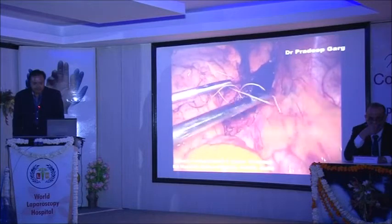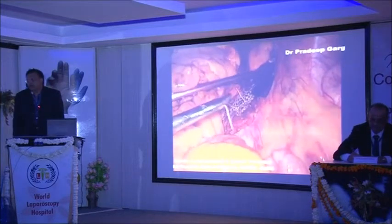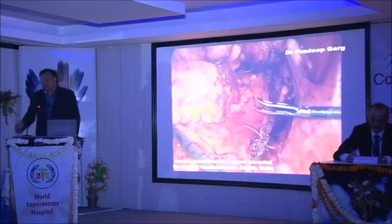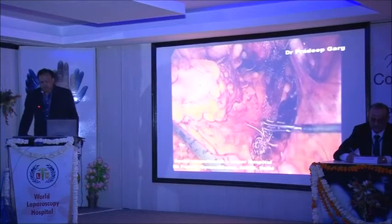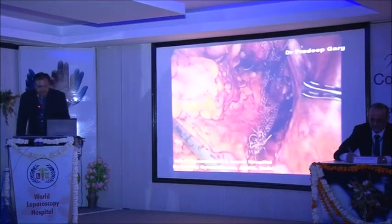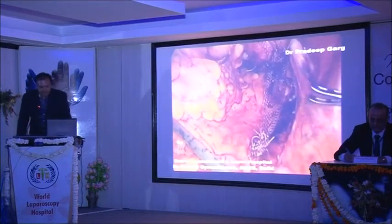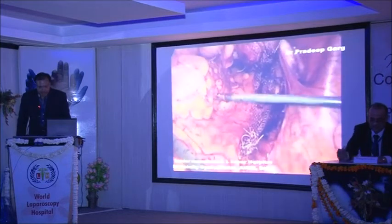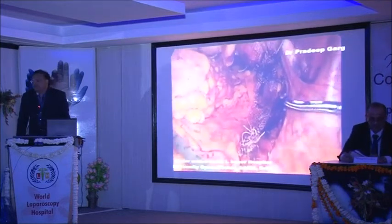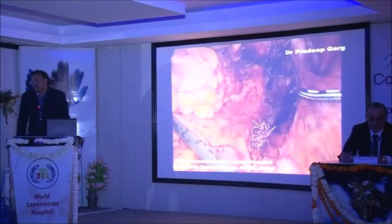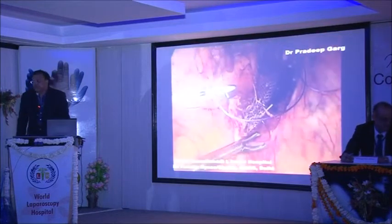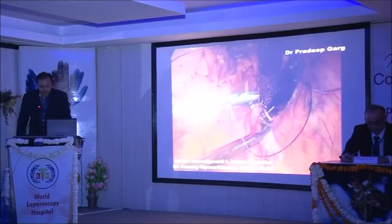Take three to four sutures, and if you are not comfortable with this suture, you can use a tacker. This is the final picture of the mesh — you can appreciate it. Then you cover this mesh with the peritoneum, cutting from the sacral promontory to the right utero-sacral ligament with the help of a bipolar.